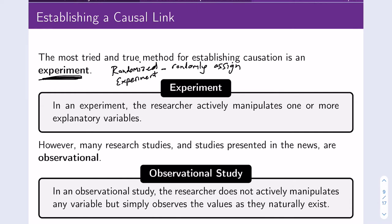In contrast to an experiment, most of the research studies that you've heard about, that you've learned about, and that are presented in the news are observational. In an observational study, the researcher doesn't actively manipulate anything. They don't go in and change an explanatory variable — they just look at what's happening and observe whether or not something changes.